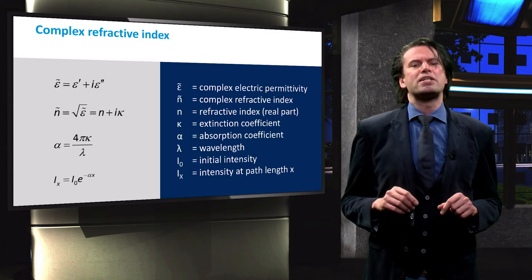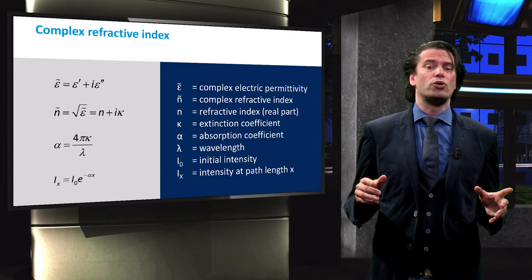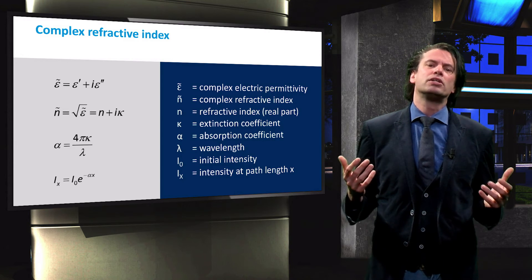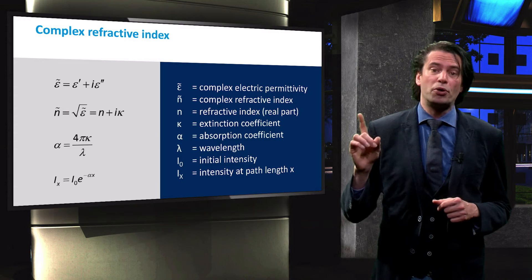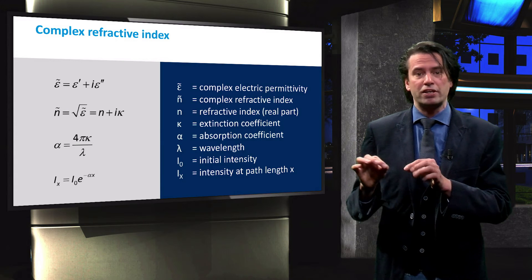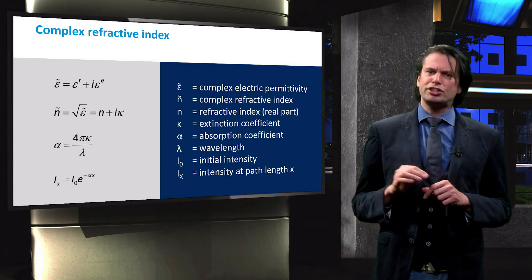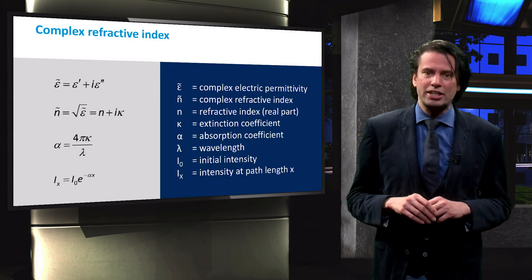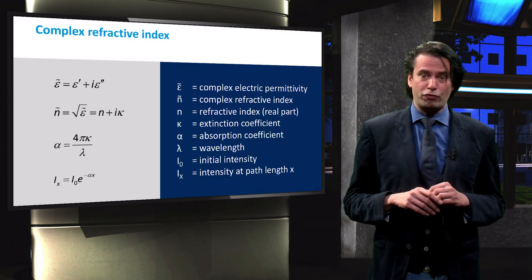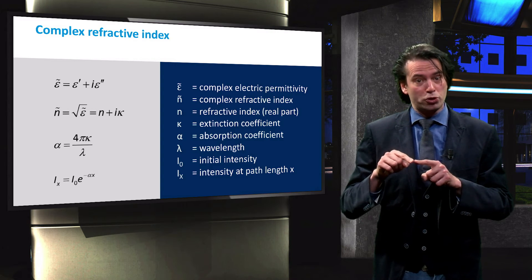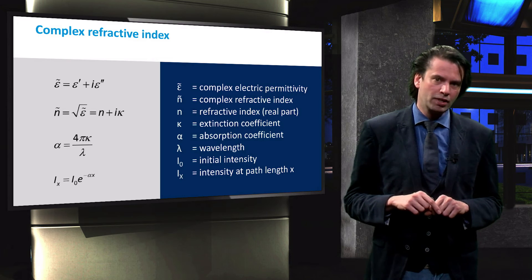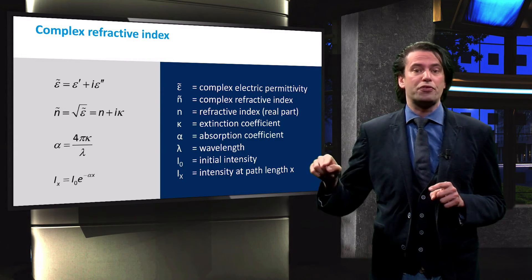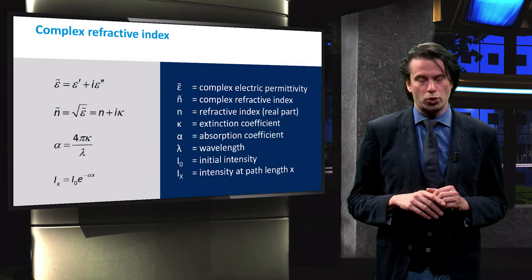The law that describes the light absorption in a medium is called the Lambert-Beer law. The Lambert-Beer law is used to determine the light intensity at a certain point in a medium after traveling a distance x. The law states that the intensity at x is equal to the initial intensity times the exponential function of the product of the absorption coefficient and the path length x. The light intensity therefore decays exponentially while traveling through a certain absorbing medium.